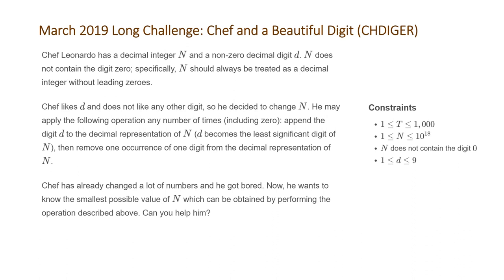Then remove one occurrence of one digit from the decimal representation of n. Chef has already changed a lot of numbers and he got bored. Now he wants to know the smallest possible value of n which can be obtained by performing the operation described above. Can you help him?